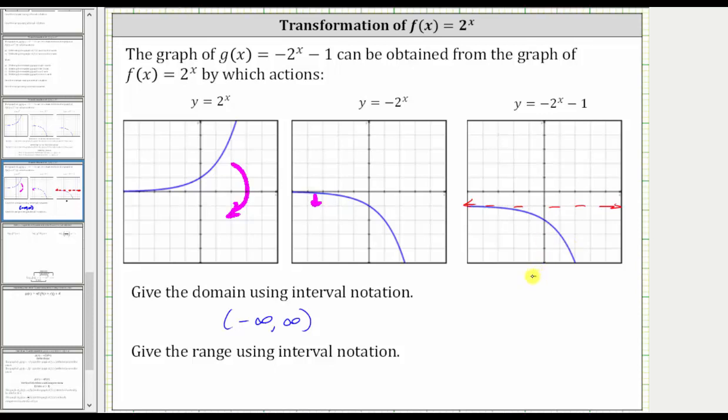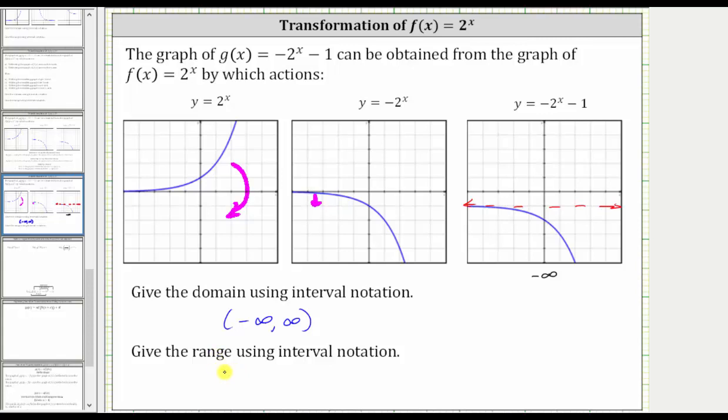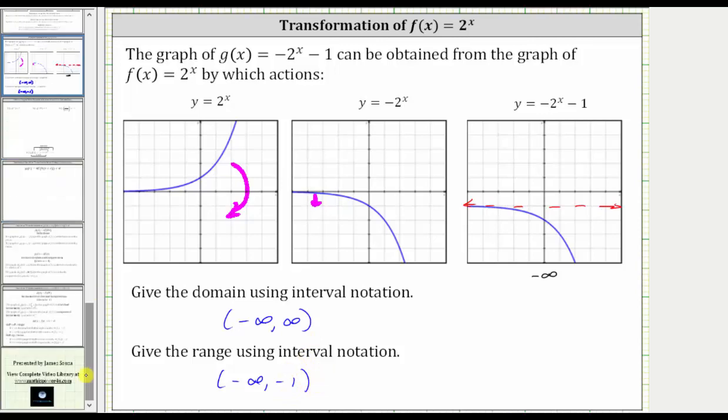So the range would be y is less than negative 1, which using interval notation is the open interval from negative infinity to negative 1. We have a parenthesis to the right of negative 1 because negative 1 is not in the range. If it was in the range, we'd use a square bracket. I hope you found this helpful.